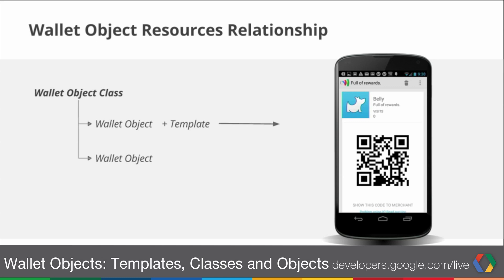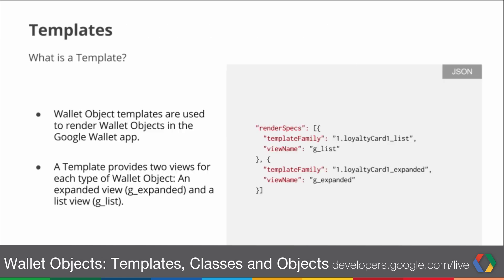Users are then associated with this object, and that's how users see it within the Wallet app. So how do we define templates? Well, the templates to use are actually defined within the class. There's a render specs field within the class, which is an array that defines the views.